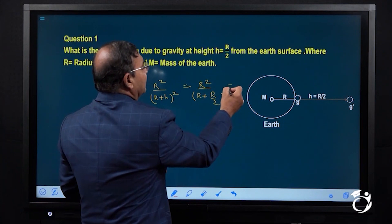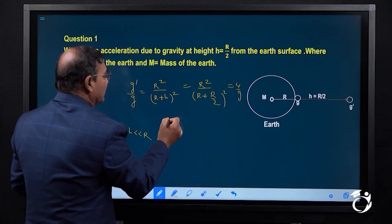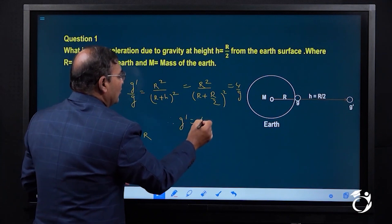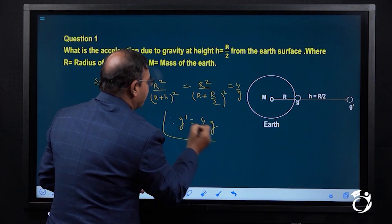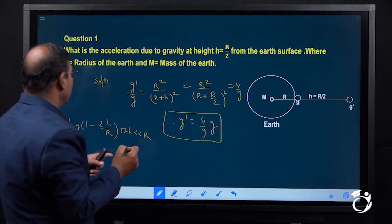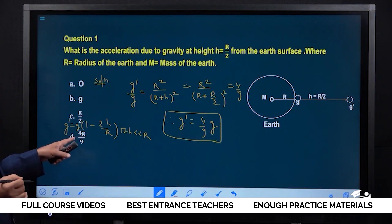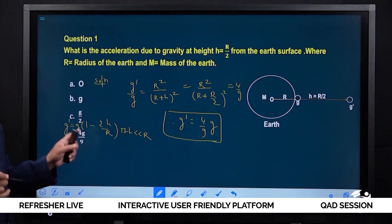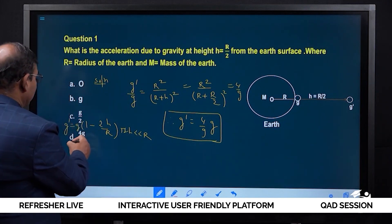4 by 9. Therefore g dash is equal to 4 by 9 g. So option d, 4g by 9, is the correct answer. We have to take d as correct.